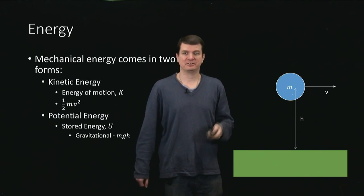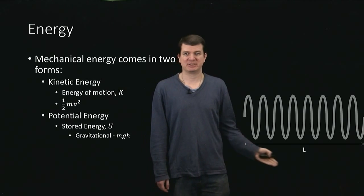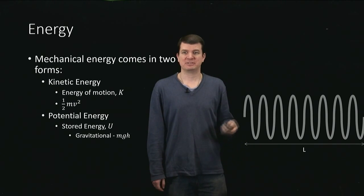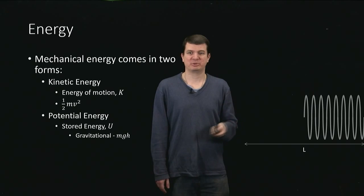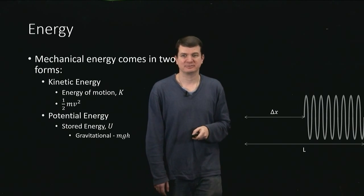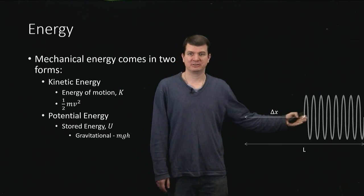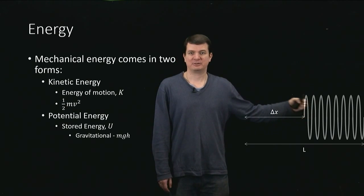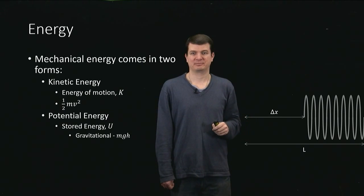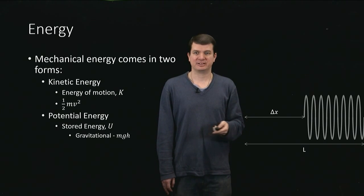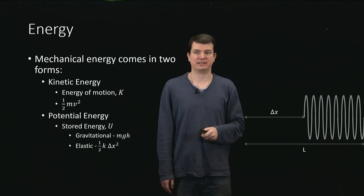Another example of how we can store energy is we can take a spring. And if we take this spring, which has some natural length L, and we start to compress it, then if it's compressed by an amount delta x from its normal length, it ends up having an energy stored because that spring has the potential and it wants to, in fact, return to its normal length. So that energy that is stored in there turns out to have this form, one half k delta x squared.